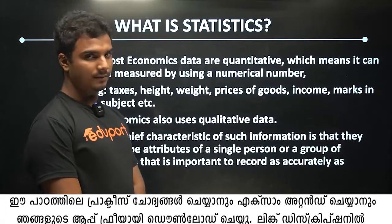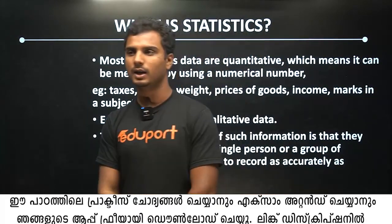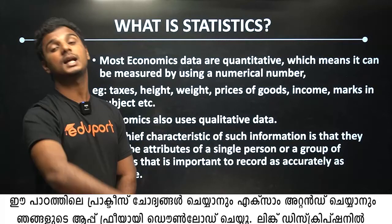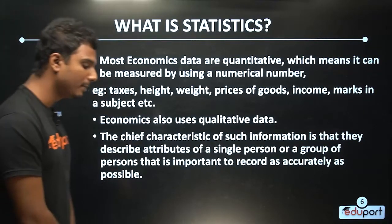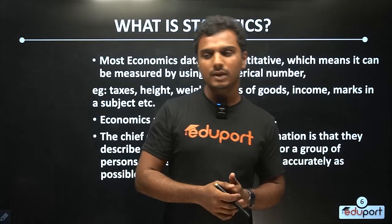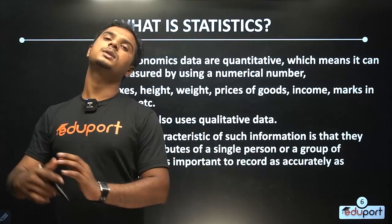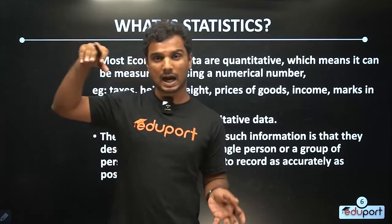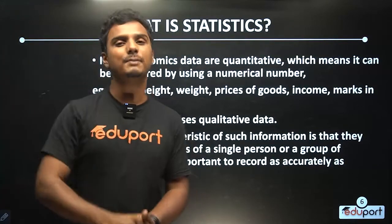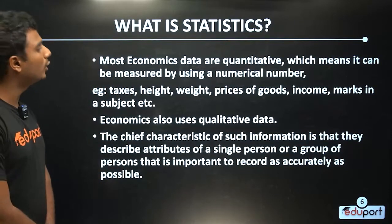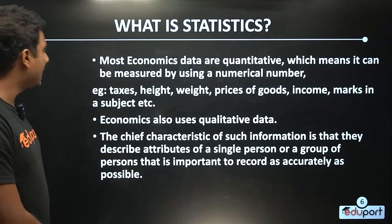Most economic data are quantitative. Economic data like GDP and Foreign Direct Investment are quantitative data. Most economic data are quantitative, which means they can be measured using numerical numbers. Examples include taxes, height, weight, prices of goods, income, and marks in a subject.